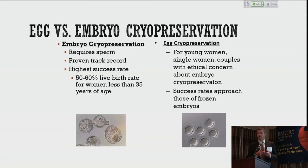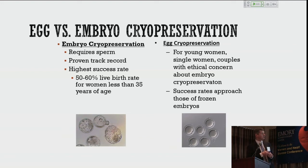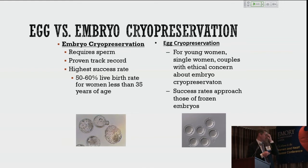Embryo cryopreservation is great when somebody is in a committed relationship and knows she wants to conceive with her current partner. Not every egg turns into an embryo — there's a lot of attrition. For patients who are young and don't have a partner with whom they're certain they want to conceive, we can freeze eggs instead of embryos. With modern technology, egg freezing and thawing survival rates are about as good as for embryos — a very popular method of fertility preservation.